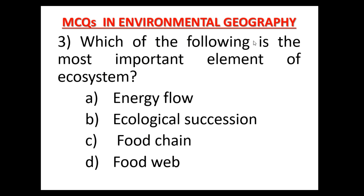Question number three: Which of the following is the most important element of ecosystem? Ecosystem के प्रमुख तत्वों में से कौन सर्वाधिक important है? Option A: Energy flow, Option B: Ecological succession, Option C: Food chain, Option D: Food web. Energy flow का महत्व सबसे ज्यादा है ecosystem में, और energy flow के कारण ही ecosystem जीवित होता है। Therefore, Option A — energy flow is the most important element of ecosystem.